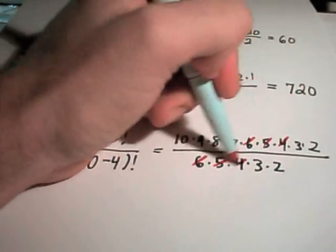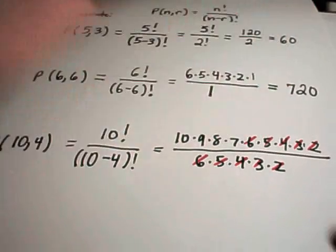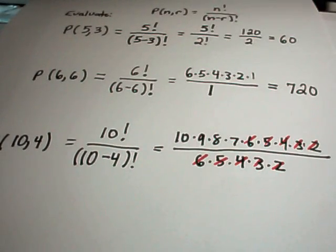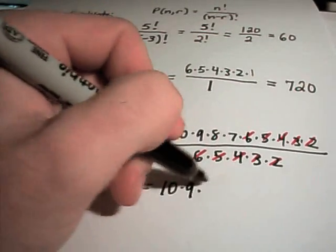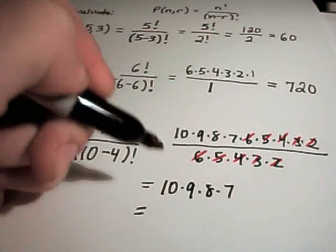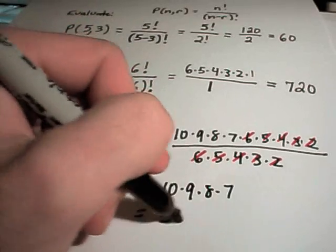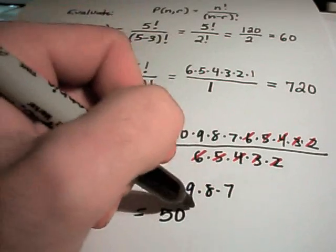Well you can actually cancel out the 6's, the 5's, the 4's, the 3's, and the 2's. So all we're left with is the top part, which is 10 times 9 times 8 times 7, and this number turns out to be 5,040.